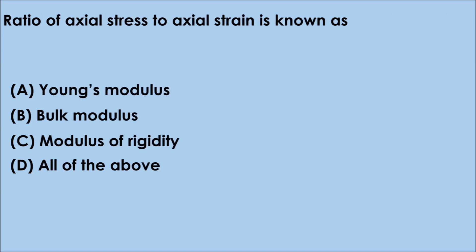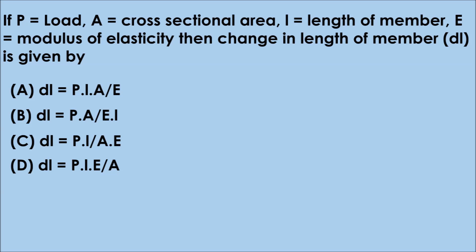Question No. 9: Ratio of axial stress to axial strain is known as — Option A. Young's modulus, B. Bulk modulus, C. Modulus of rigidity, D. All of the above. The correct answer is option A. Young's modulus. The ratio of axial stress to axial strain is Young's modulus.